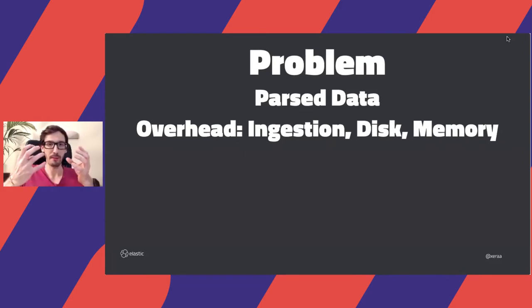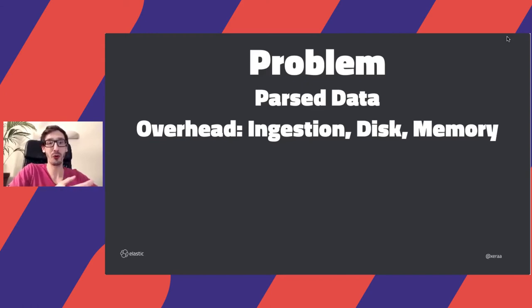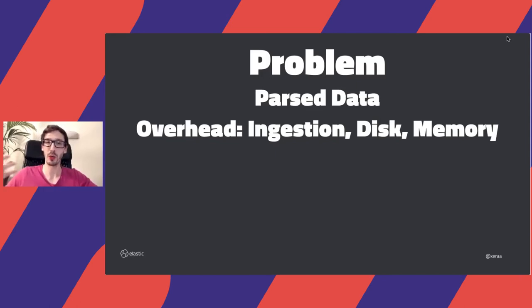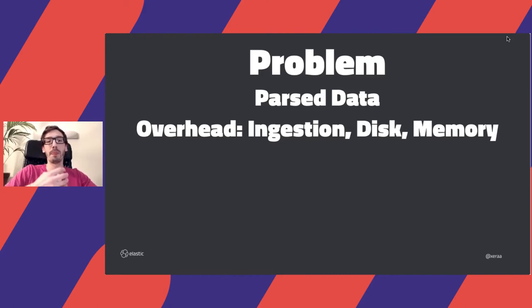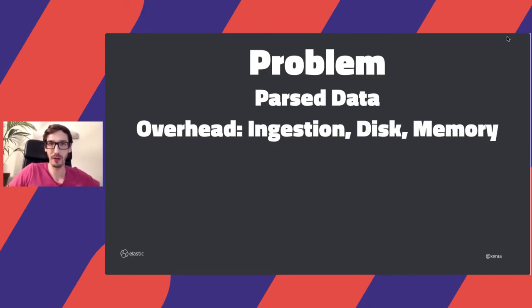The problem is that parsing is potentially complicated and expensive unless you write in a structured format like JSON right away — which is highly recommended. If you don't have that, you might need to write parsing rules. There's overhead for all that structure and indexing — creating all those index structures makes searches more performant afterwards, but it takes extra computation, extra disk space, and potentially extra memory to keep those index structures quickly available. So there is a cost to all of that.